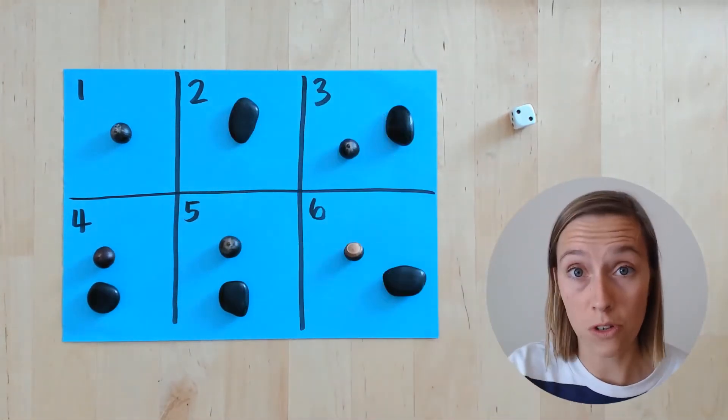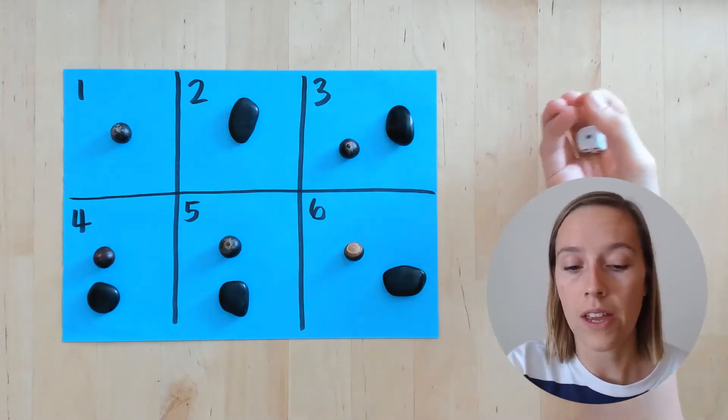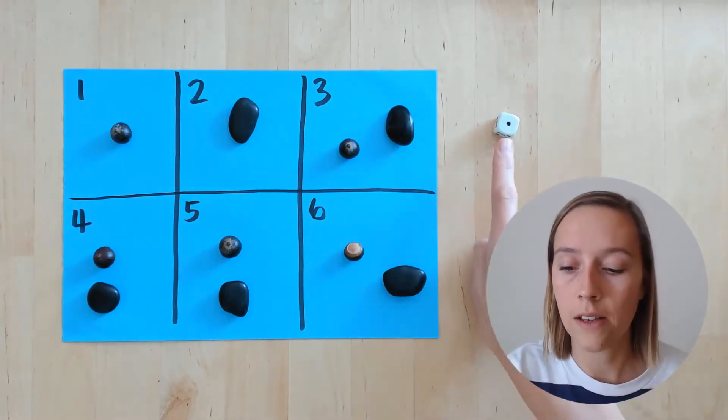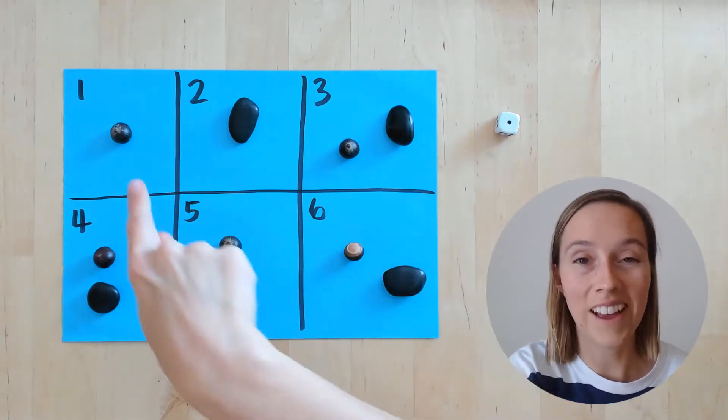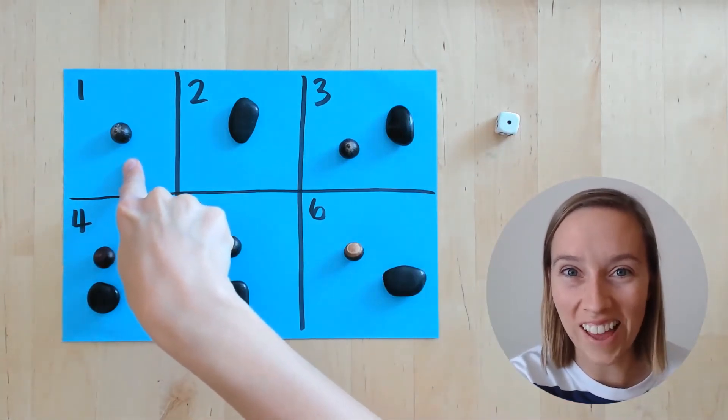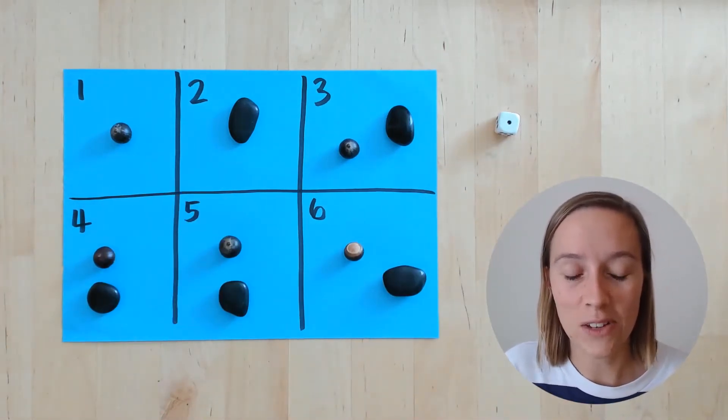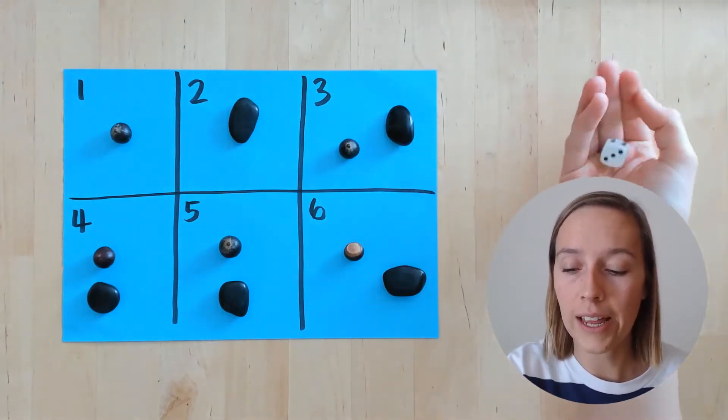And then it's the rocks person's turn. So they give it a shake, lower the dice, just one dot. There's no rocks on number one either. Okay, so now it's the acorns turn again. Give it a shake.